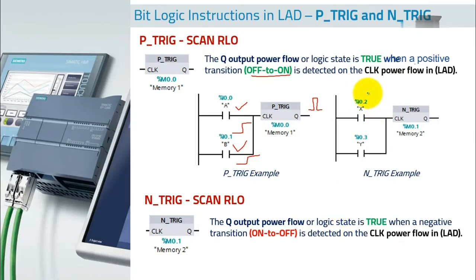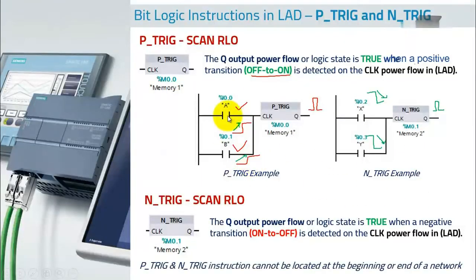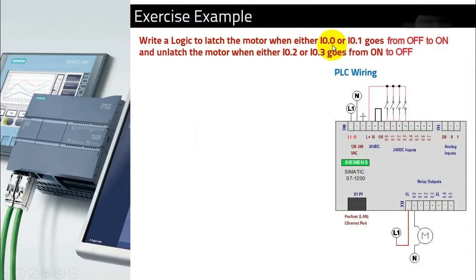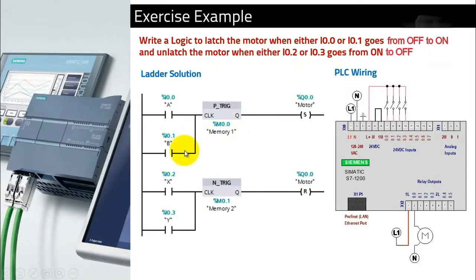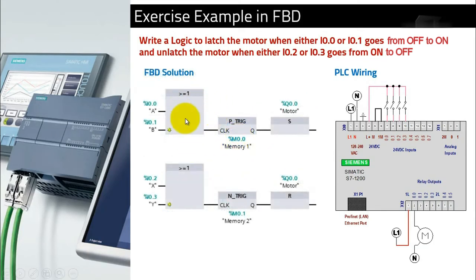For example, with two inputs A and B — I0.0 and I0.1 — connected in parallel and fed into the P-trigger, you get a pulse if either input goes off to on. Similarly, the N-trigger gives a pulse on on-to-off transition of the RLO. The difference is: the positive/negative edge contact detects a single operand, while P/N trigger operates on the result of a logic operation.